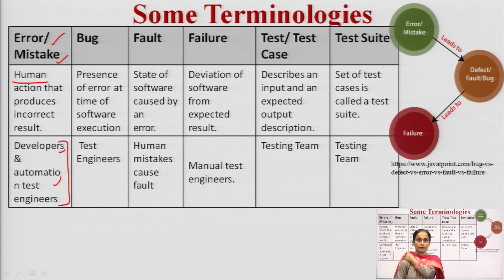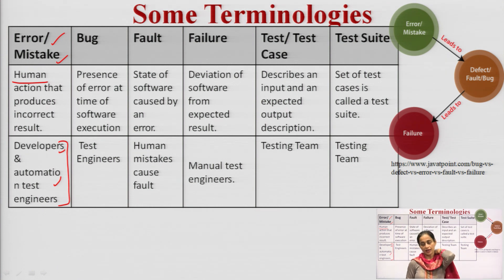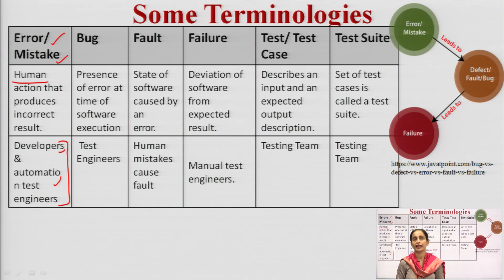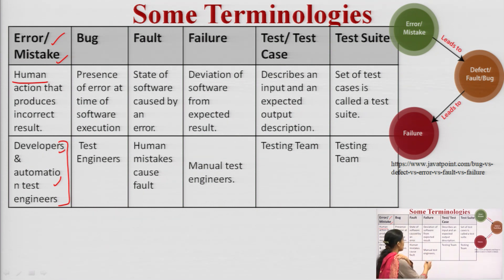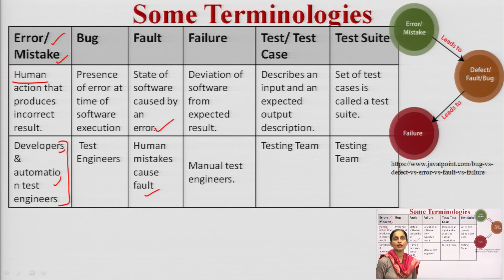Then, bug. Bug is the presence of an error at the time of software execution — that is, an error that occurs when I was executing my software. That is known as a bug by test engineers. What is a fault? Fault is the state of the software caused by an error. Human mistakes cause faults.